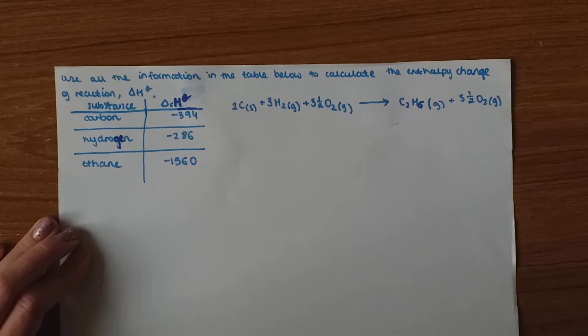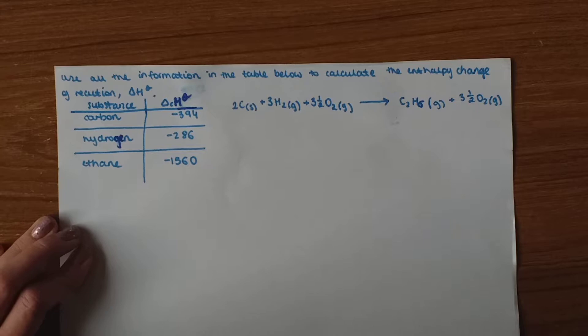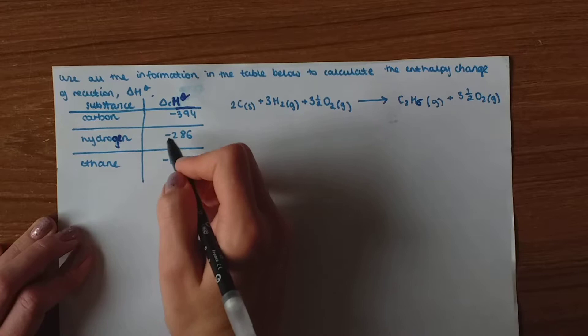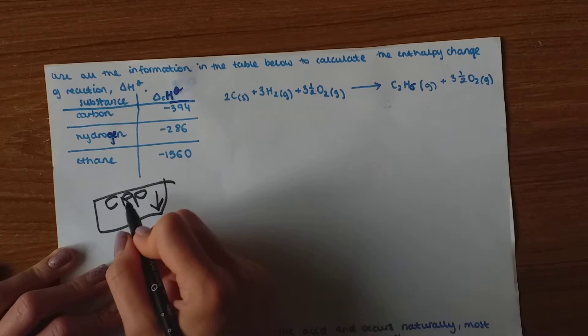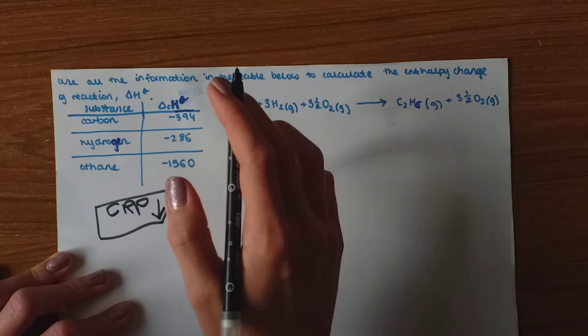So the next question says use all of the information in the table below to calculate the enthalpy change of reaction. So the table gives us the enthalpy change of combustion for all of these elements. So we know it's a combustion, so CRP arrow going down. That's something you should really learn because it really helps. CRP, FPR, arrows going up, down.